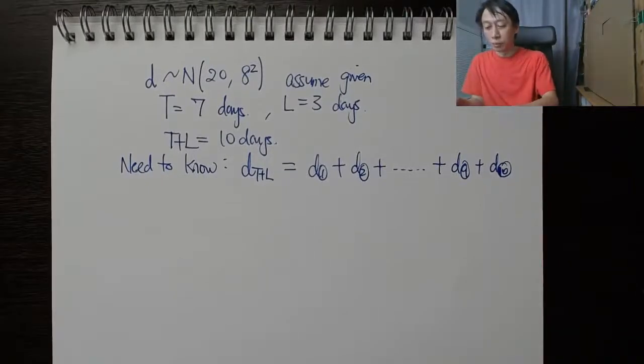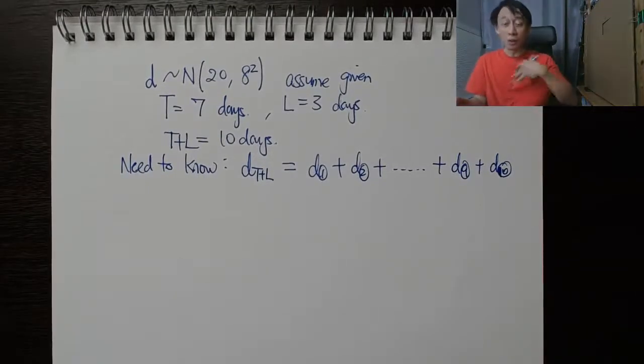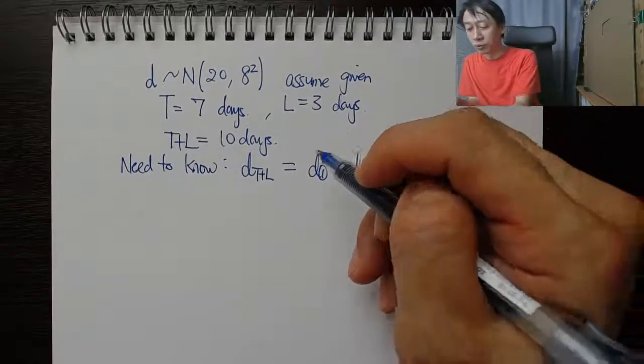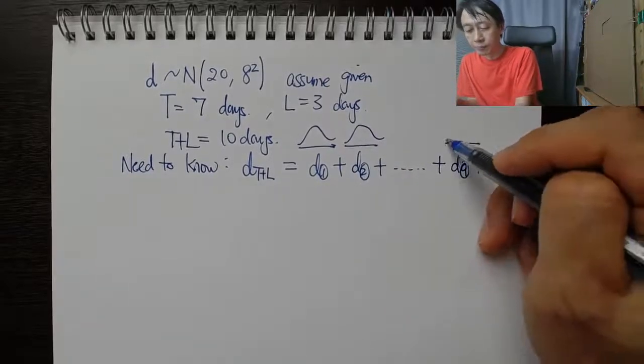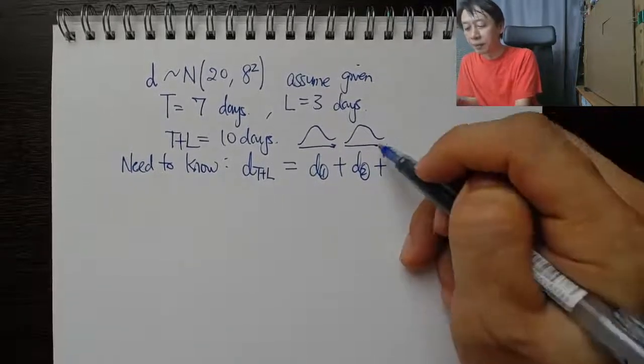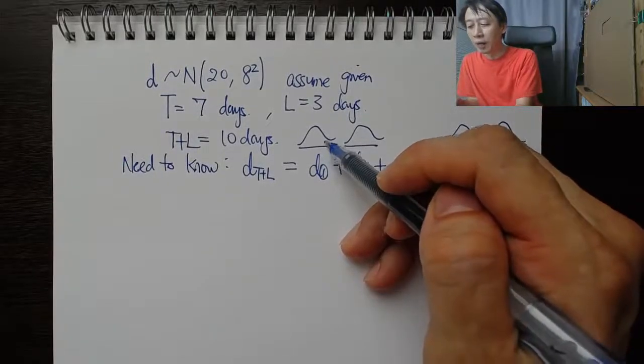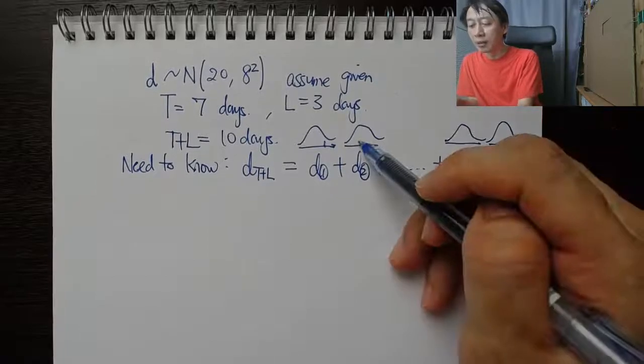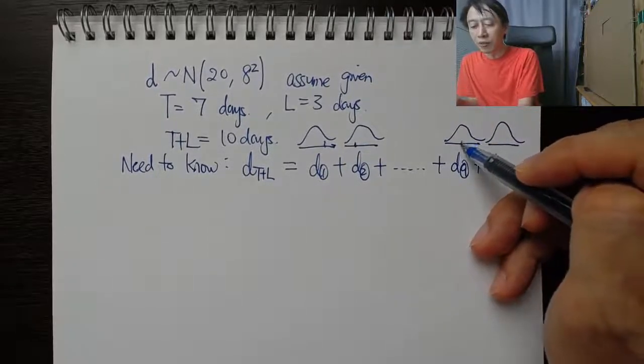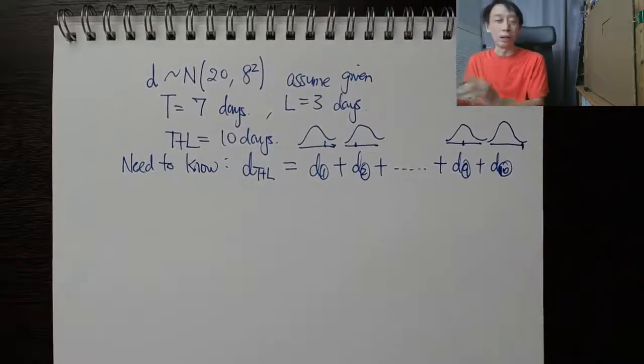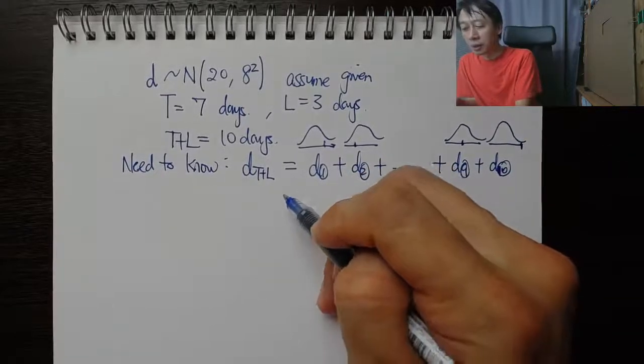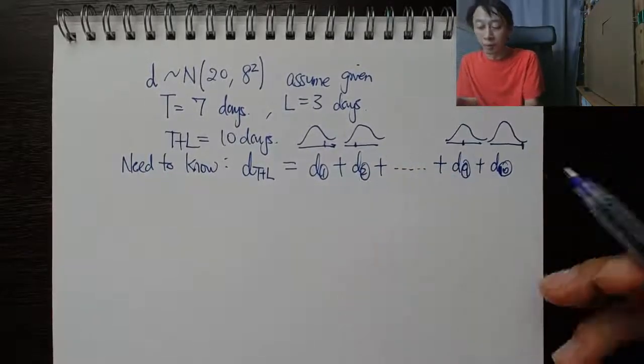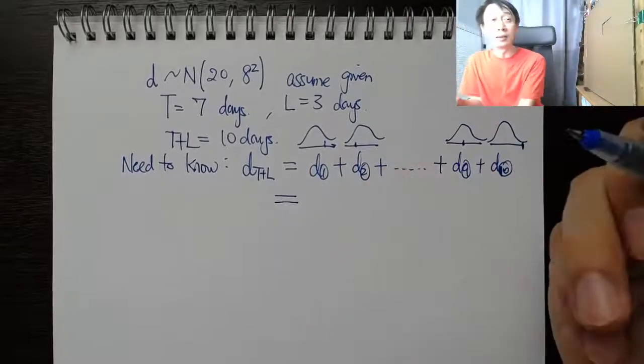Every day is a normal distribution, but they are independent. The first day could have high demand, second day low demand, ninth day average demand, 10th day extremely high demand. They can all change on their own account and are not related to each other. This is normal plus normal plus normal 10 times. From statistics, we know normal plus normal gives us normal distribution.